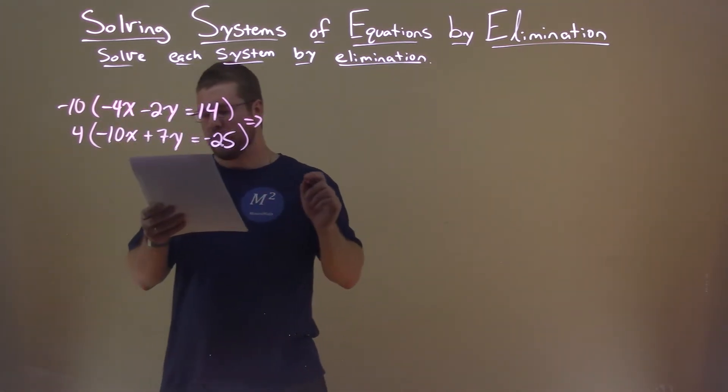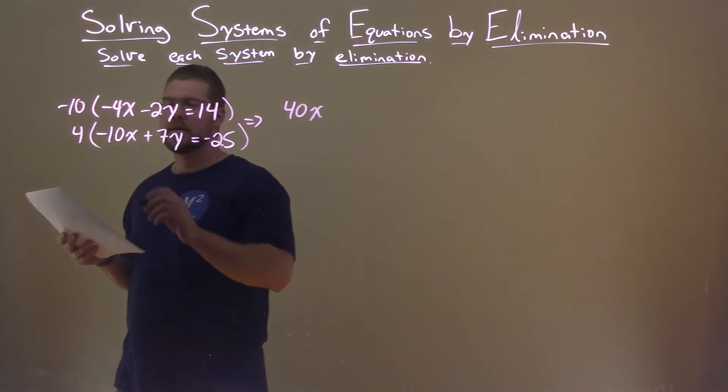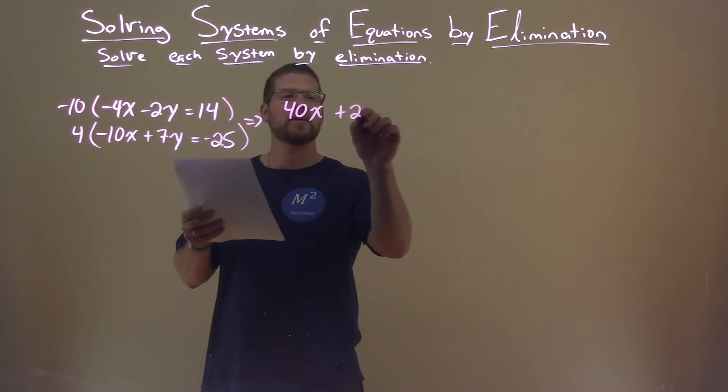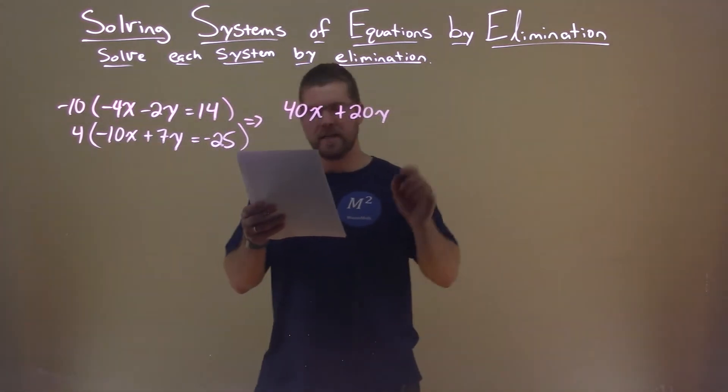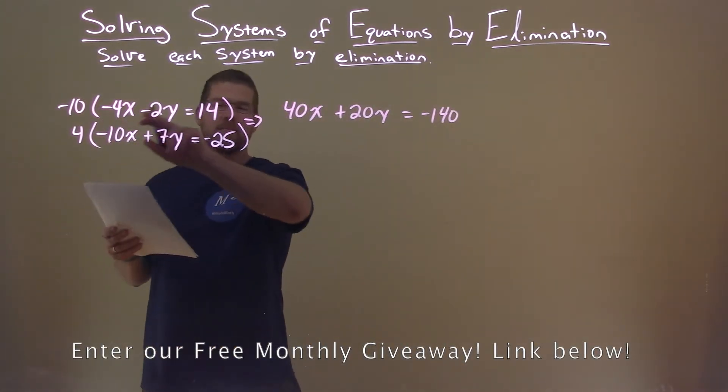Negative 10 times negative 4x is a positive 40x. Negative 10 times a negative 2y is a positive 20y. Negative 10 times 14 is a negative 140. Don't forget to keep bringing the negative over.